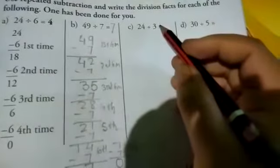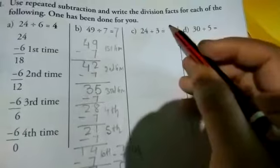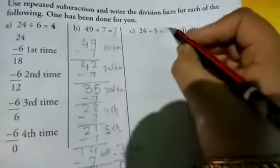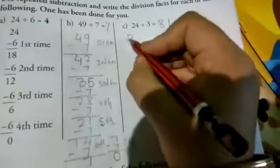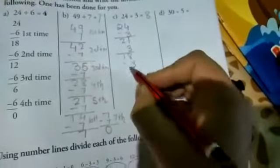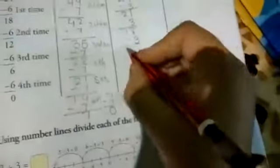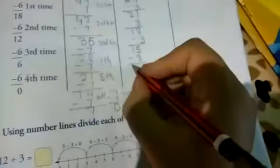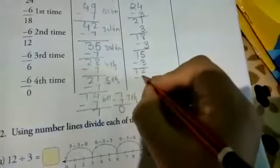24 divided by 3 equals 8. 24 minus 3, 21 minus 3 is 18, 18 minus 3 is 15, 15 minus 3 is 12, 12 minus 3.